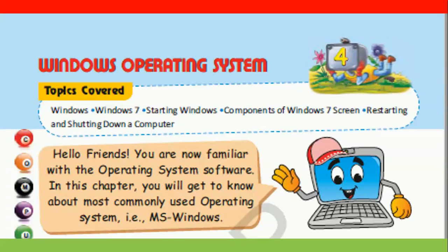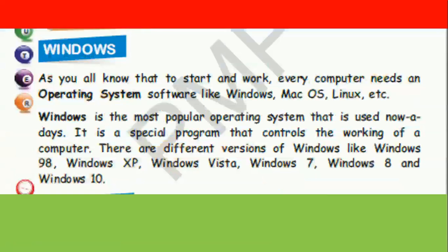Hello friends. You are now familiar with operating system software. In this chapter you will get to know about the most commonly used operating system, e.g. MS Windows. As you all know, every computer needs an operating system software to start and work — like Windows, Mac operating system, Linux etc. Windows is the most popular operating system used nowadays; it is a special program that controls the working of a computer.